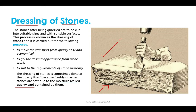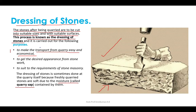The dressing of stones is defined as cutting stones into suitable sizes with suitable surfaces after quarrying. This process has three objectives: first, to make transport from quarry easy and economical; second, to get the desired appearance for stonework; and third, to suit the requirements of stone masonry, which include certain size, shape, and finish.